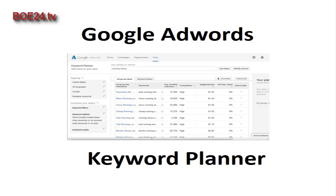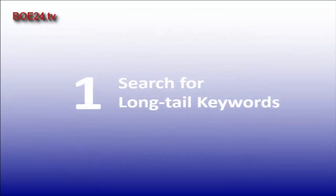As you can see in the results for 'running shoes,' many keywords have a high search volume but they also have high competition. The easiest way to get around this problem is to focus on long tail keywords. A long tail keyword is a search term that's more specific and longer than a simple one or two word search term. WordStream provides a keyword tool that will recommend long tail keywords for you.